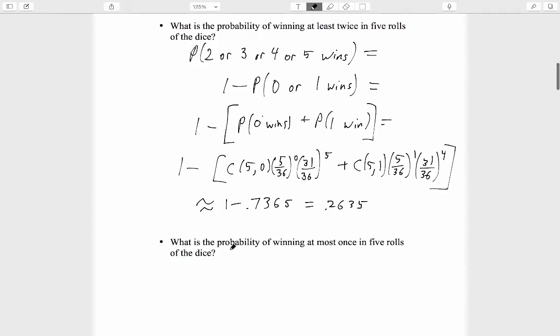The follow-up question asks, what is the probability of winning at most once in 5 rolls of the dice? And the good news is that we've already done all the work. This right here is the answer to our question. This 0.7365 equals the probability of 0 wins or 1 win. This 0.7365 is exactly what we just computed to be the probability of 0 wins or 1 win.